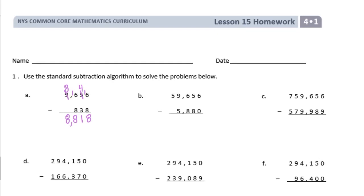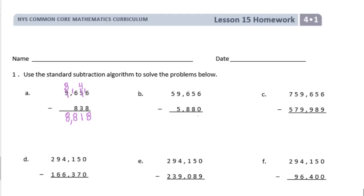B. 6 minus 0 is 6. 5 minus 8 we cannot do — we'll borrow from the 6, it becomes a 5. Now we have 15 minus 8 is 7. 5 minus 8, we can't do that, so borrow from the 9, it becomes an 8. 15 minus 8 is 7. 8 minus 5 is 3. And 5 minus nothing is 5. 53,776.